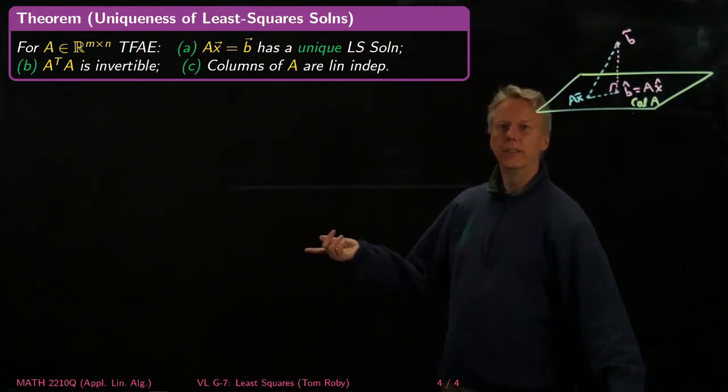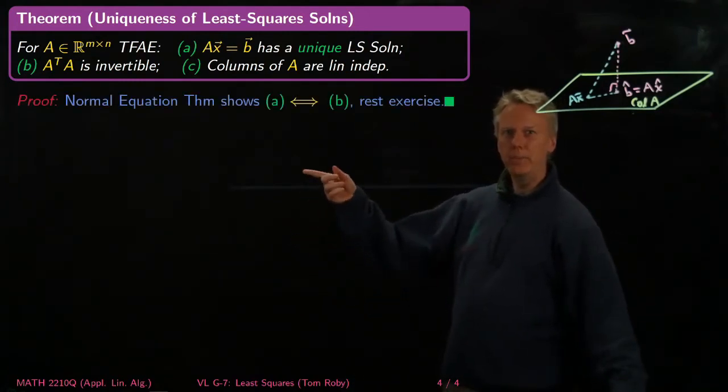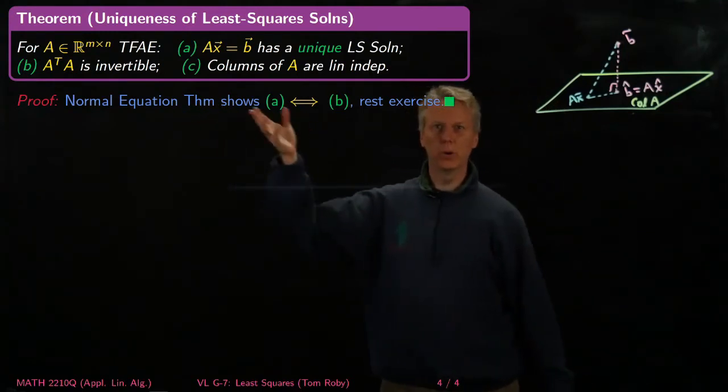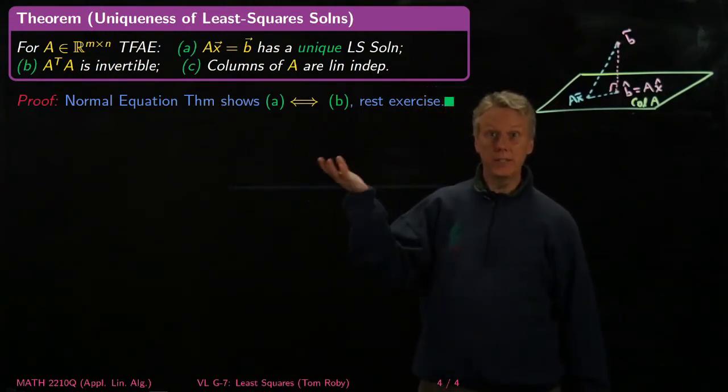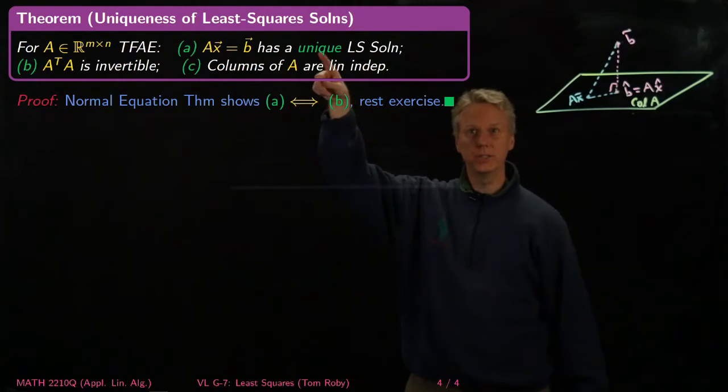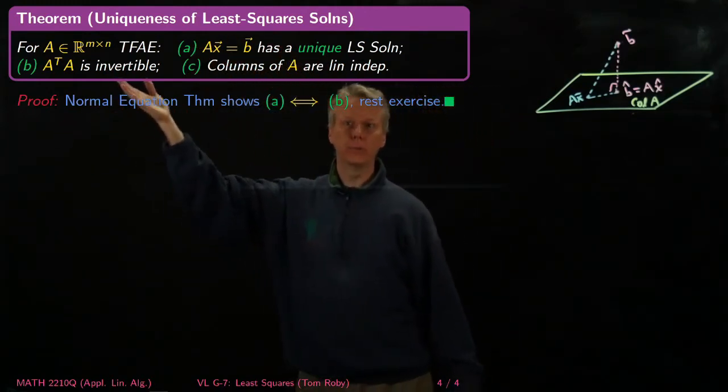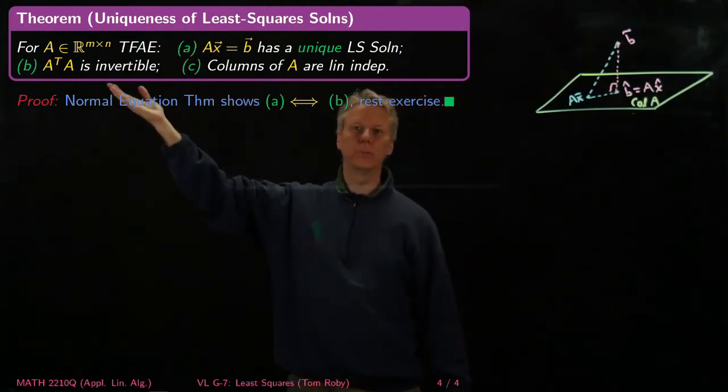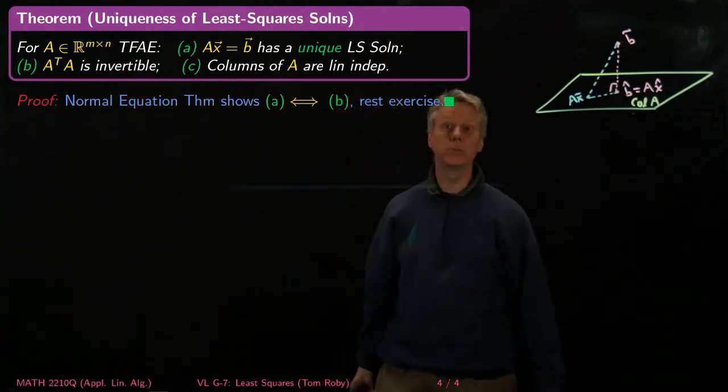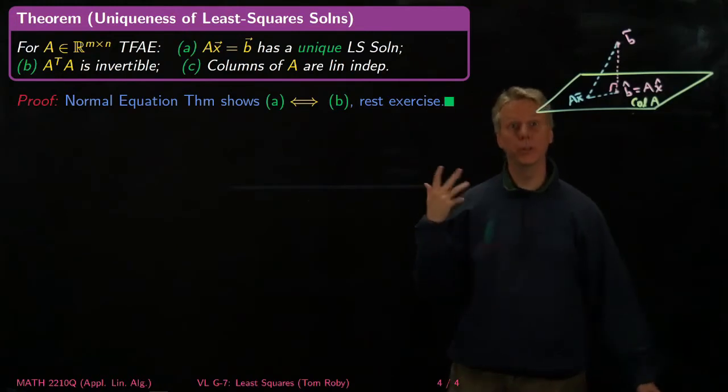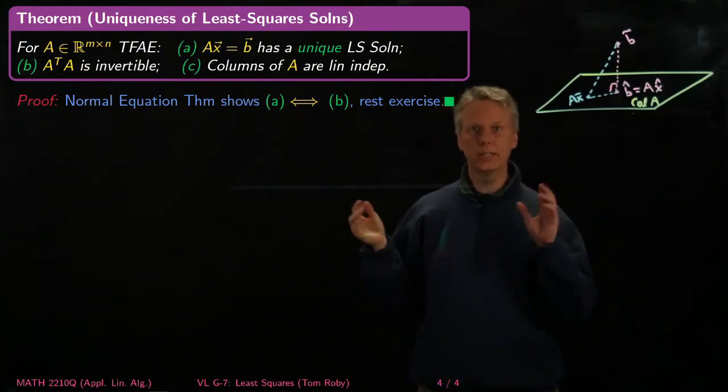Actually, the fact that A and B are the same just follows from the normal equation. Because we've shown that the set of solutions, the least square solutions to a system, is exactly the set of actual solutions to A transpose Ax = A transpose b. And there's a unique solution for A transpose A equal to anything if A transpose A is invertible. And if it's not invertible, then we get multiple solutions. So that's basic.